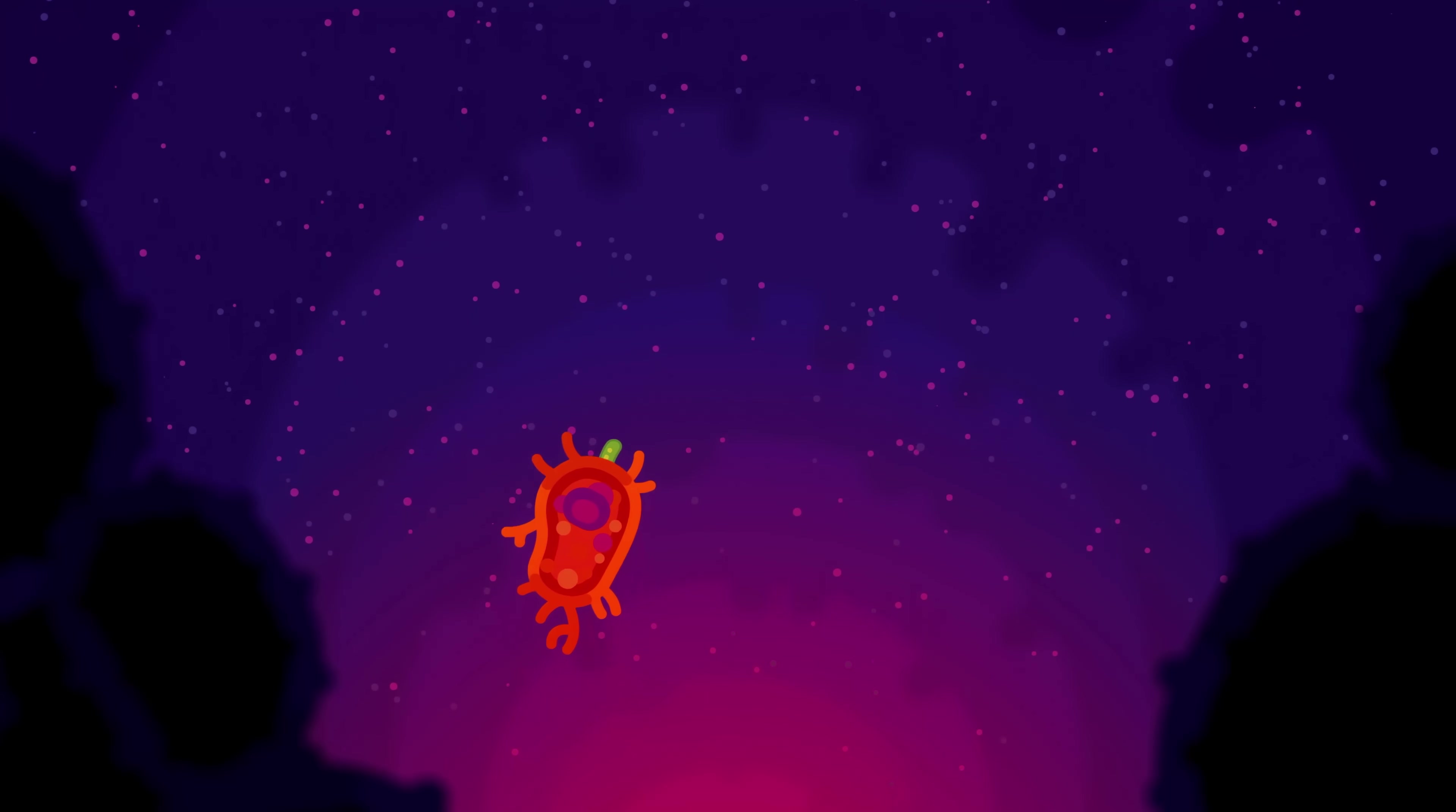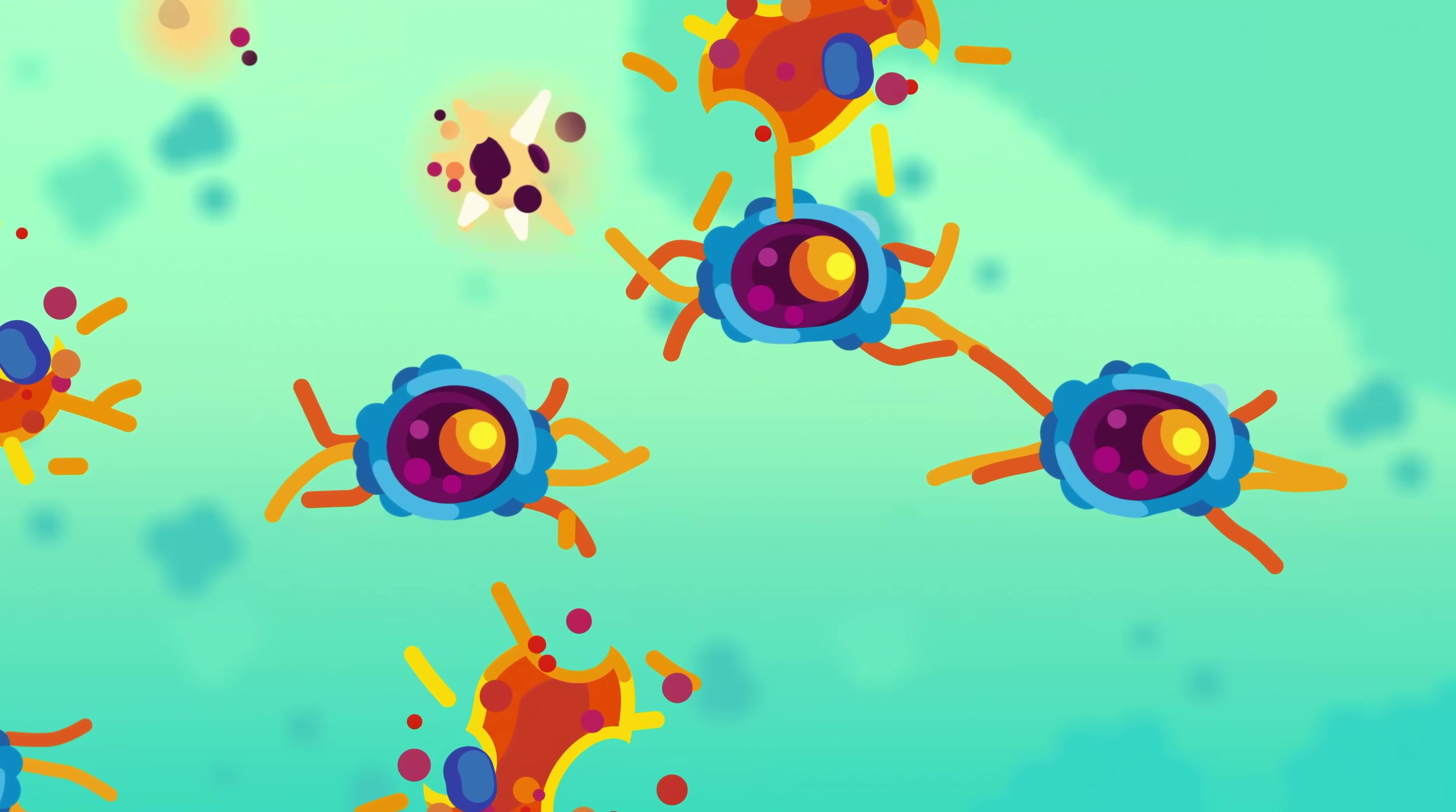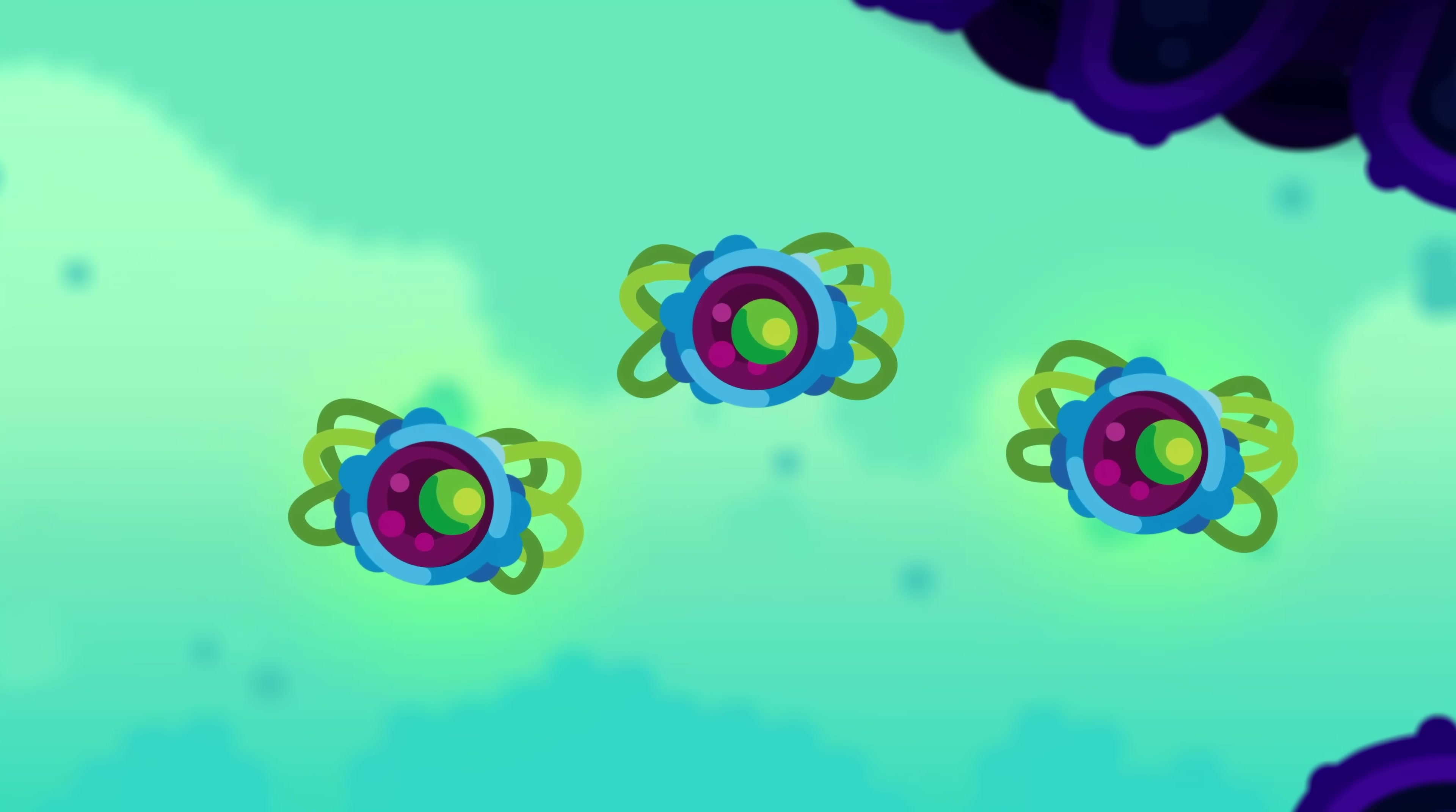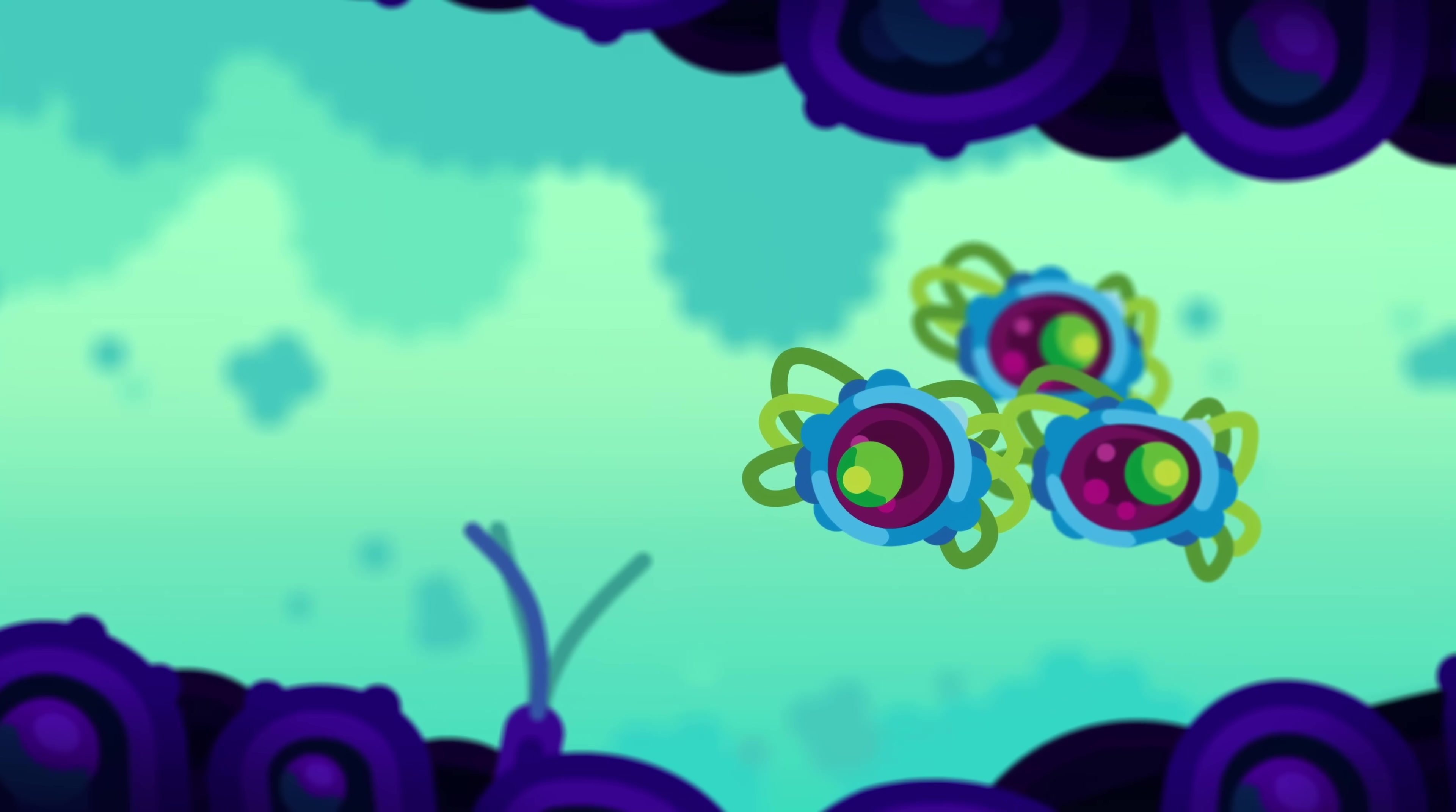As the last enemies are cleaned up, your soldiers realize they are no longer needed and begin to kill themselves to save resources. But not all of them. A few helper T cells remain and turn into memory cells. They will guard the tissue for years, making sure the same bacteria will never again gain a foothold here.